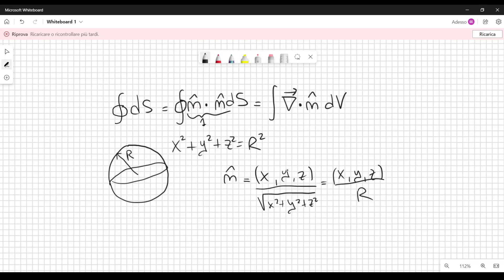Another way to find the normal, if you don't remember this expression, is to calculate the gradient of this expression here. So if you consider the gradient of that, we get 2x, 2y, 2z. And this is already a vector which is normal to the surface.